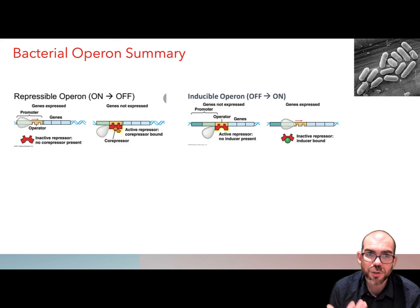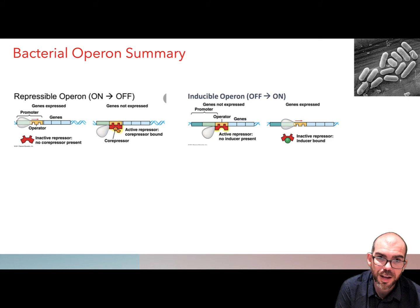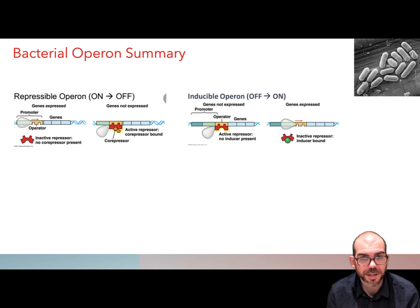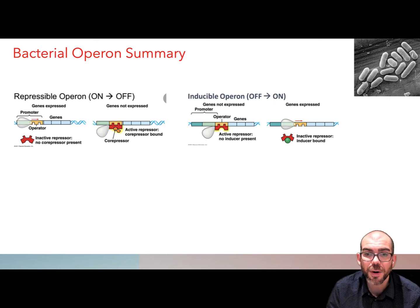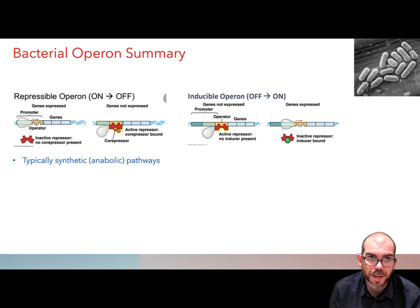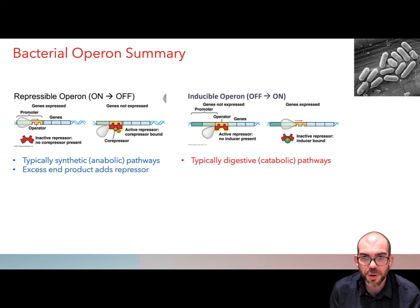As a review, we have two methods for bacterial operons. We have a repressible operon, where it begins with the gene turned on, and then too much of the product is what turns it off. That's different than the inducible operon, which begins off with the repressor attached, and the presence of the molecule to be digested is what causes it to be removed. With the repressible operon, this is typically a synthetic pathway, so it's anabolic. In the inducible operon, it's digestive, so it's catabolic.